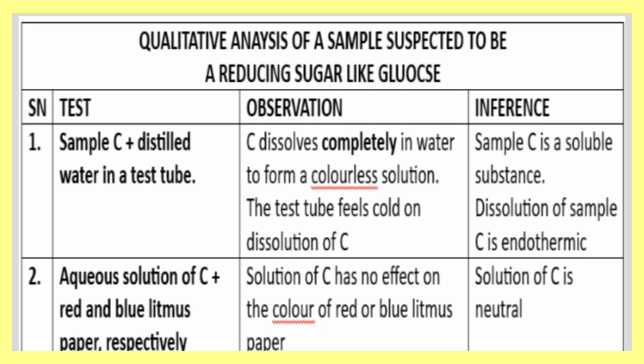Sample C plus distilled water in a test tube: if you are testing for reducing sugar like glucose, sample C will dissolve completely to form a colorless solution. Note that it dissolves completely, not partially. If C is not a mixture of salts, you can say C dissolves completely in water to form a colorless solution. In your inference, write that sample C is a soluble salt — don't use the word 'dissolves' in your inference again so that inference will score.